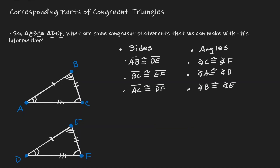So those angles opposite congruent sides are also congruent. Let's pause here. Notice: if we look at the order we list the sides, A and D are corresponding, B and E are corresponding, and C and F are corresponding. Therefore, we are saying that corresponding sides are congruent.